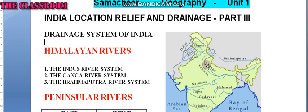The Ganga river system is the largest drainage system of India. The Ganga plain is the most densely populated place in India.